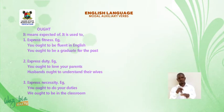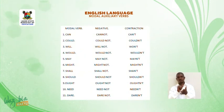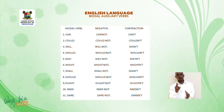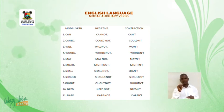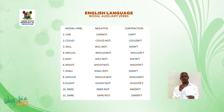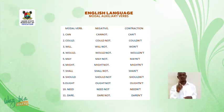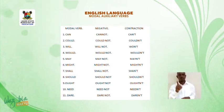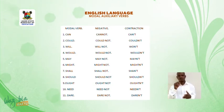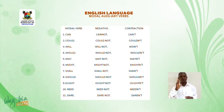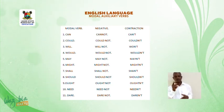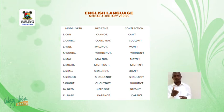Now students, let us look at this table. This table indicates the verb, the negative form, and the contraction form. Can — cannot — can't. Could — could not — couldn't. Will — will not — won't. Would — would not — wouldn't. May — may not — mayn't. Might — might not — mightn't. Shall — shall not — shan't. Should — should not — shouldn't. Ought — ought not — oughtn't. Need — need not — needn't. Dare — dare not — daren't. These are the various modal verbs, their negative forms, and their contraction forms.